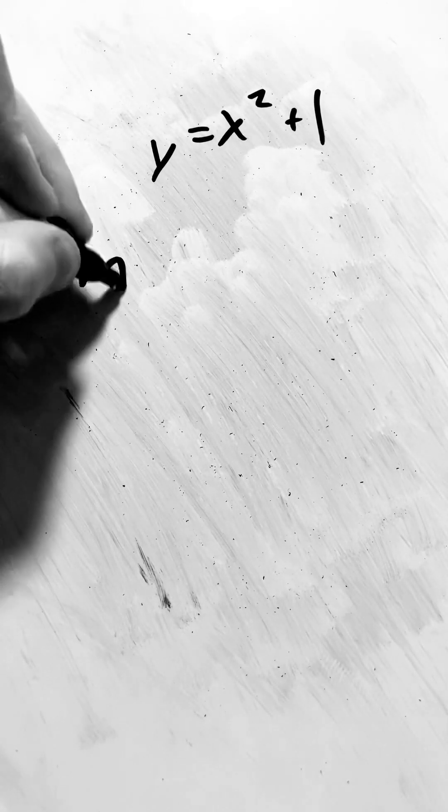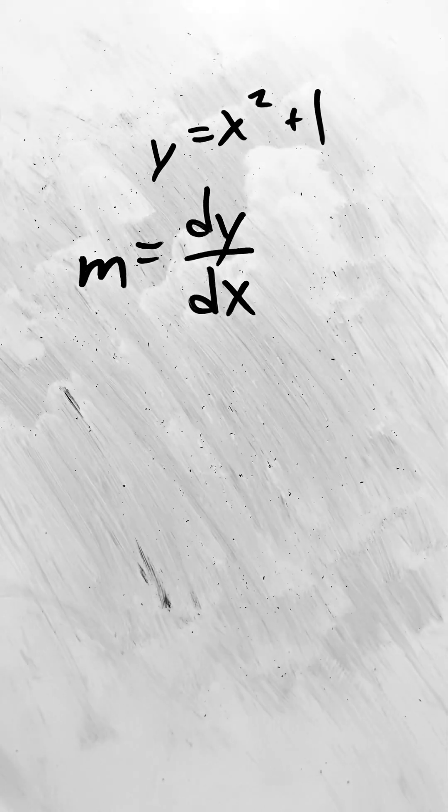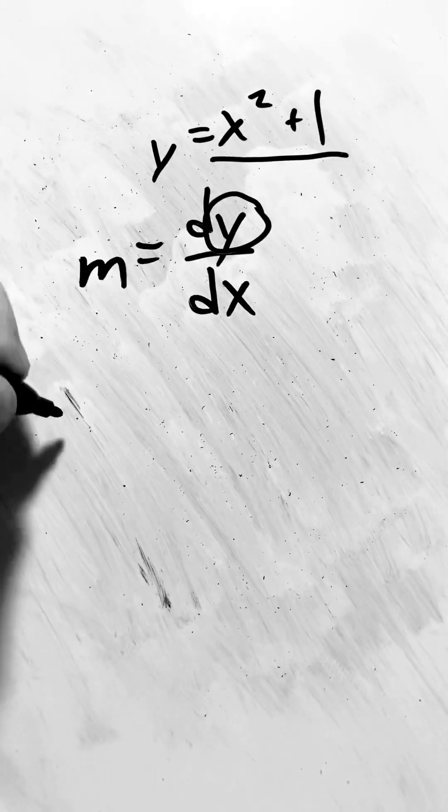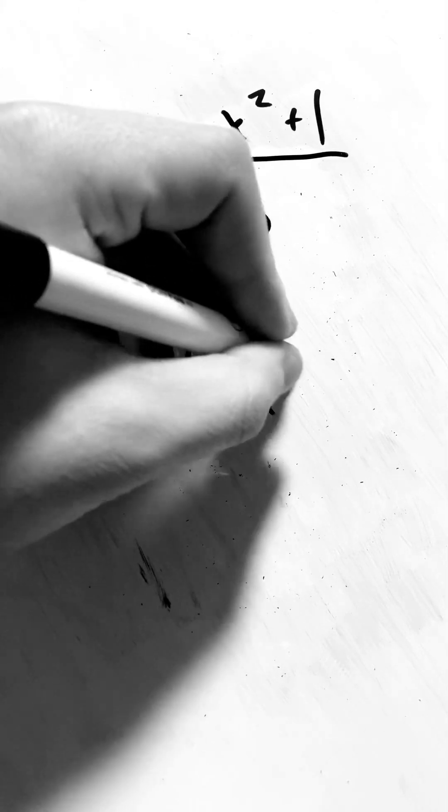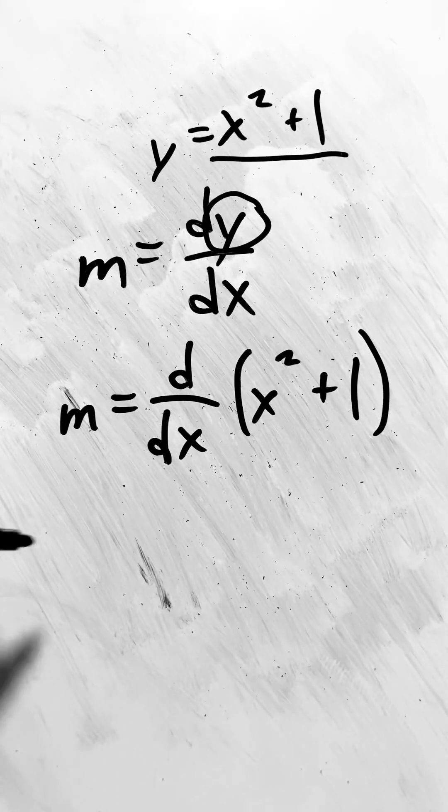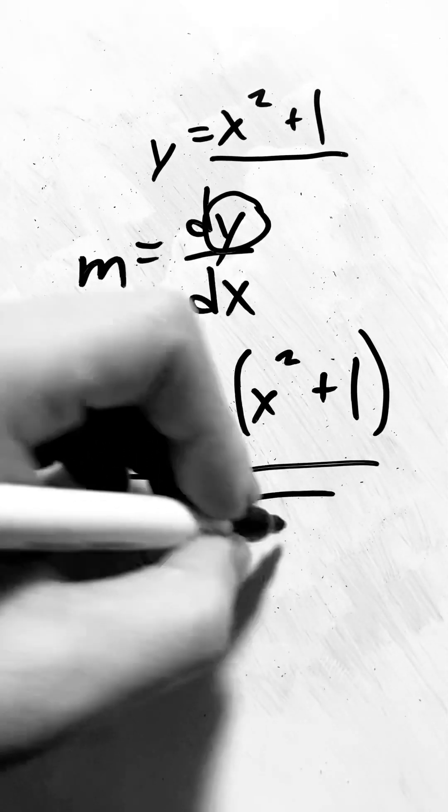Now, we can say that m equals dy over dx, but we already know what y is. It was in the equation. So we say m equals d dx times x squared plus 1. This is our answer.